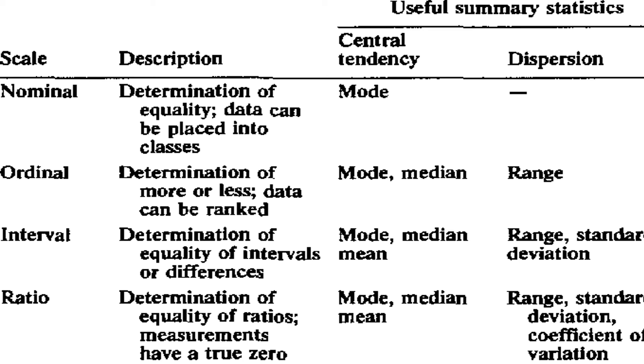Second one is ordinal scale which is determination of more or less, or data can be ranked. Measures of average include mode and median, as well as the dispersion, that is range we can identify. Third is interval scale - determination of equality of intervals or differences. Here the statistical treatment possible: under measure central tendency we can find mode, median and mean. Under dispersion we can find range and standard deviation.